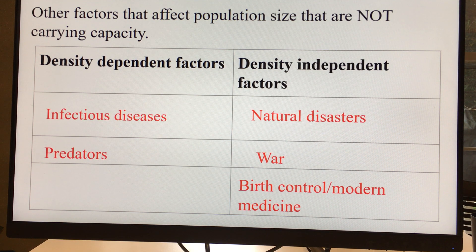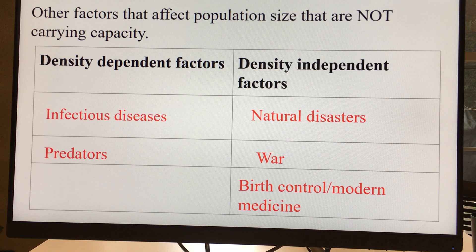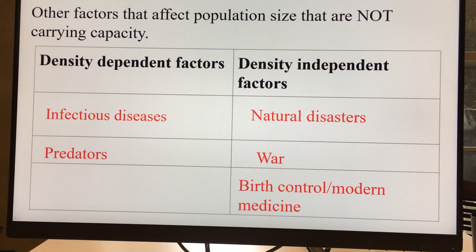Be very careful — it's very common for students to think that anything that affects population size is a carrying capacity issue. But for carrying capacity, it has to be based on available resources like food, water, or shelter. Natural disasters can lower your population but are not related to running out of resources, and war is similarly not related to carrying capacity, even if people might go to war over a lack of resources — that's a different situation.